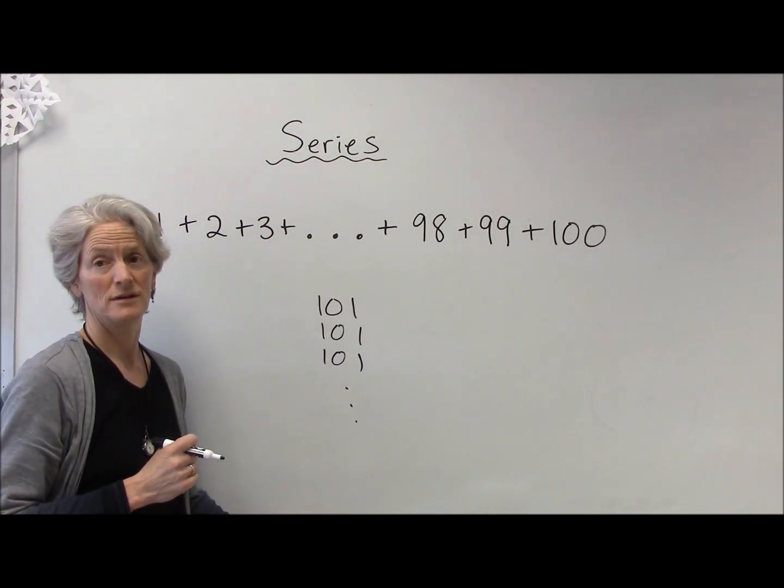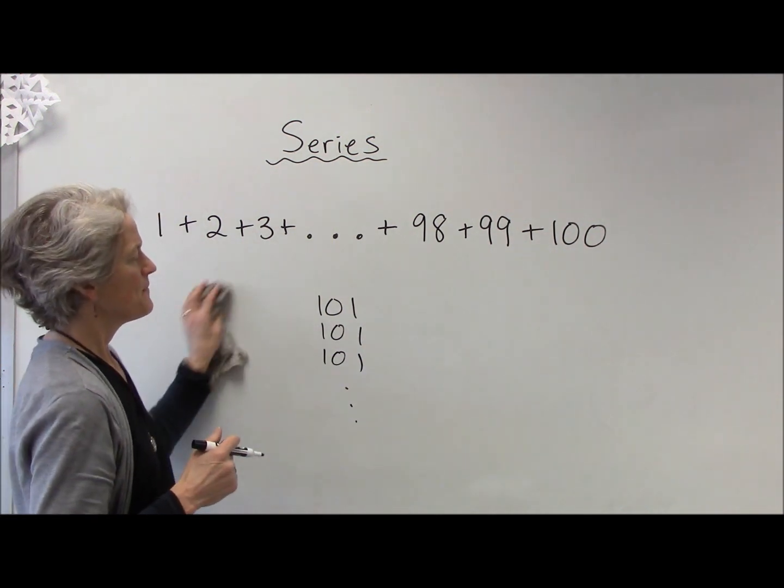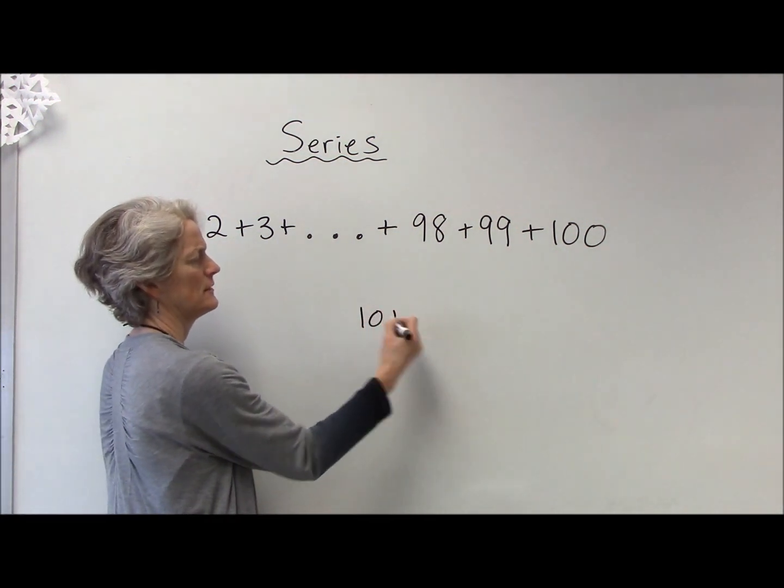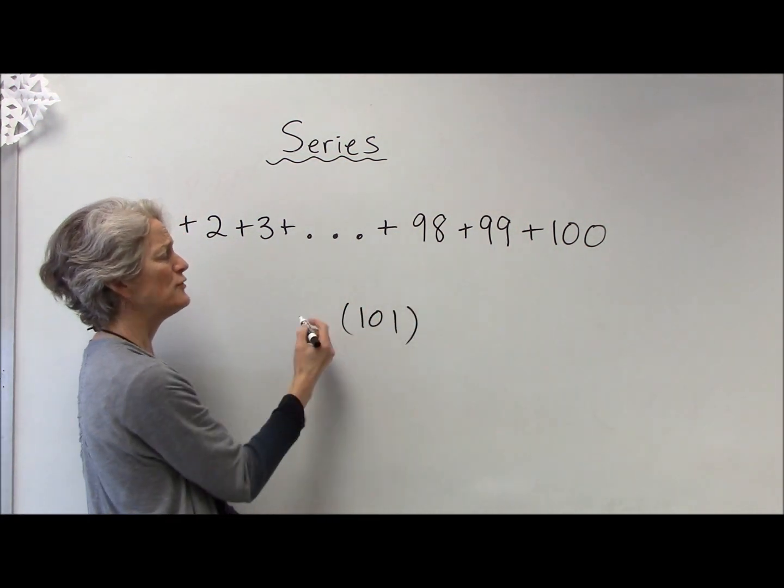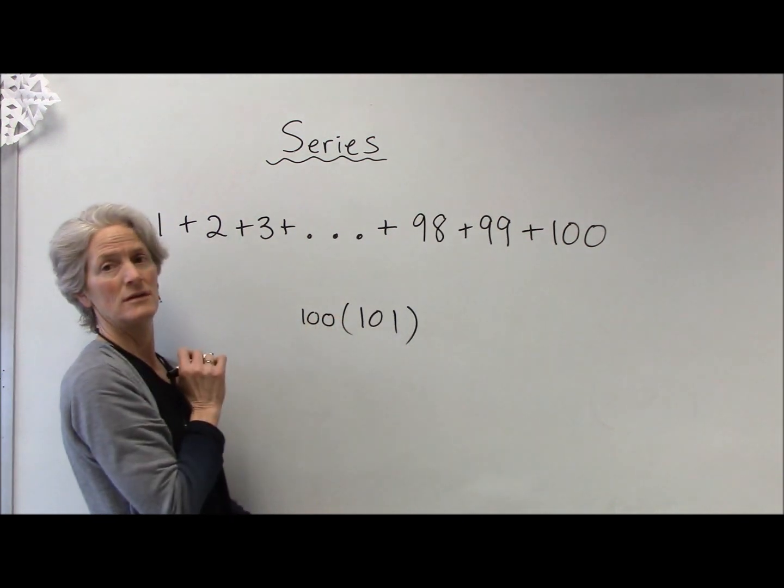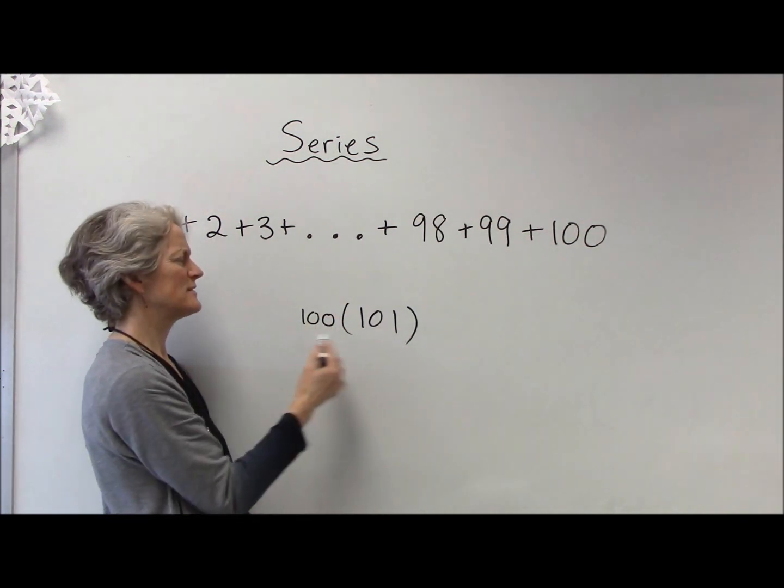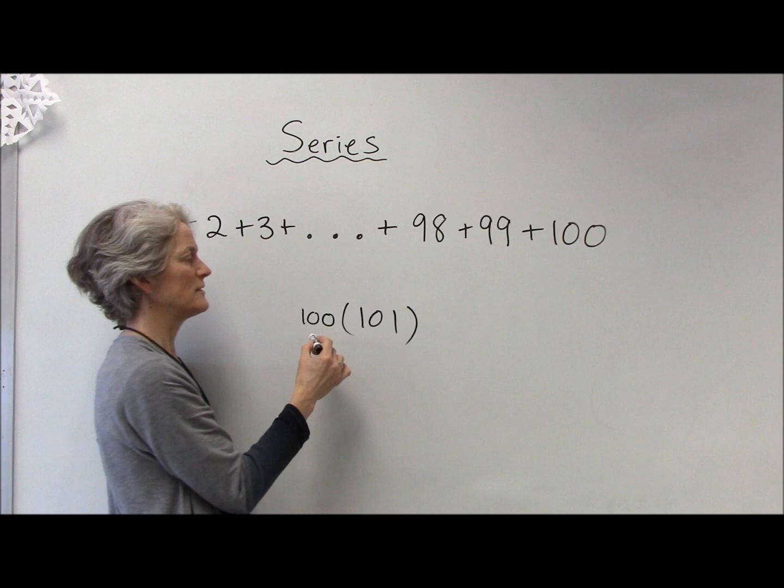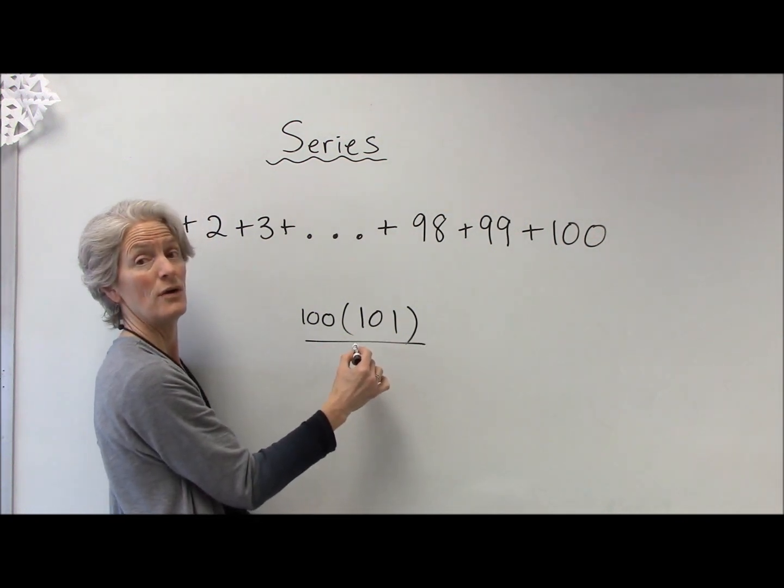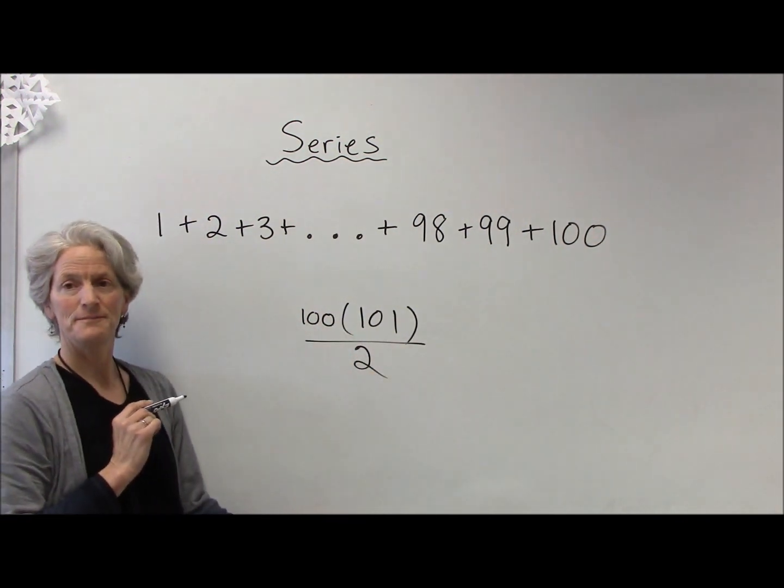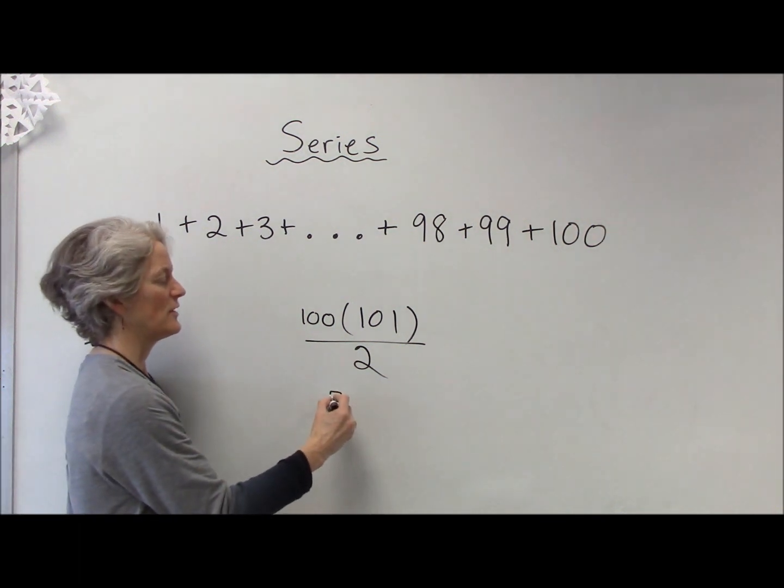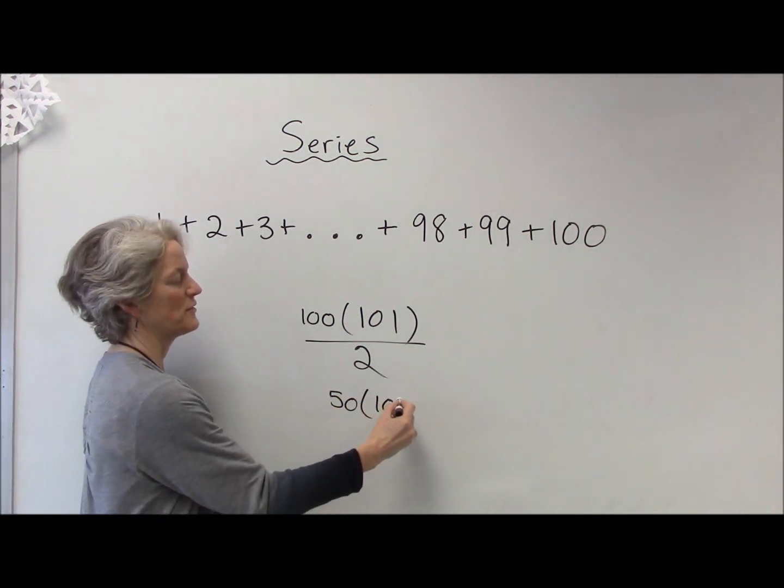Well, let's see, how many 101's are there? There are 100 terms, but he's not going to multiply it by 100 because there are pairs. So he divided it by two, so it ended up being 50 times 101.